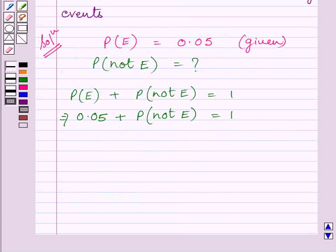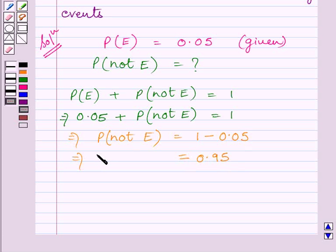Now subtracting 0.05 from both sides of this expression, we get probability of not E is equal to 1 minus 0.05. So we get probability of not E is equal to 0.95.